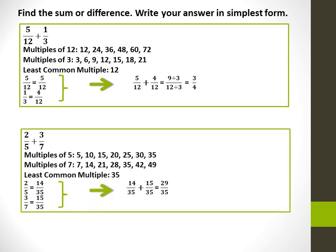2 over 5 plus 3 over 7: the least common multiple of 5 and 7 is 35. 2 over 5 is equal to 14 over 35, since I multiply 5 by 7 to get 35, so I multiply the numerator and denominator by 7. The numerator and denominator of 3 over 7 must be multiplied by 5, giving 15 over 35. 14 over 35 plus 15 over 35 is equal to 29 over 35. This fraction is in simplest form since 29 is prime and 35 is not divisible by 29.